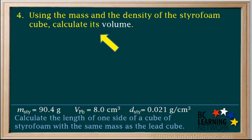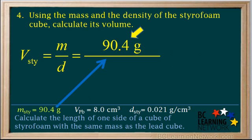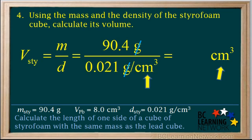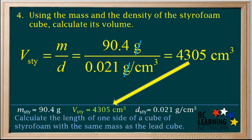In step four, we use the mass and the density of the styrofoam cube to calculate its volume. The formula for volume is V equals M over D. The mass of the styrofoam M is equal to 90.4 grams, and the density of the styrofoam D is equal to 0.021 grams per centimeter cubed. We cancel out the grams. The unit centimeters cubed is on the bottom of the bottom, which means it's on the top, and it is the unit for volume of styrofoam that we need. We divide 90.4 by 0.021, and the answer is 4,305 centimeters cubed. So the volume of the styrofoam cube, 4,305 centimeters cubed, is noted below.